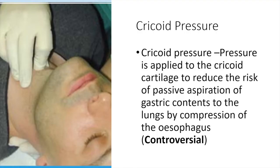Pressure and positioning. Cricoid pressure, or the Sellick manoeuvre, was first described in 1961. It is quite a controversial method and there are some contraindications: suspected cricotracheal injury, active vomiting, an unstable C-spine injury, the need for bag-mask ventilation, or a potentially difficult view of the cords on laryngoscopy. Generally, the point of cricoid pressure is to prevent passive gastric aspiration into the lungs by compression of the oesophagus, with a typically suggested pressure of 40 newtons applied by the anaesthetic assistant to the cricoid.